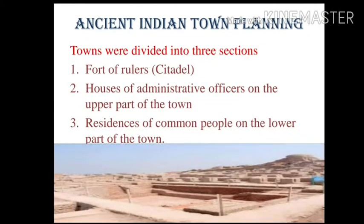The remains of ancient town planning have been found from many places in India during excavation work. From all this excavation, we know that towns were divided into three sections: the fort of rulers and houses of administrative officers on the upper part, and residences of common people on the lower part. This was a common feature found in almost all excavated towns.